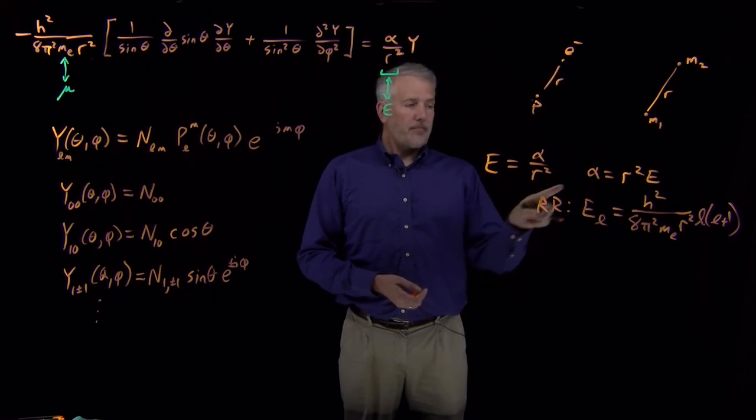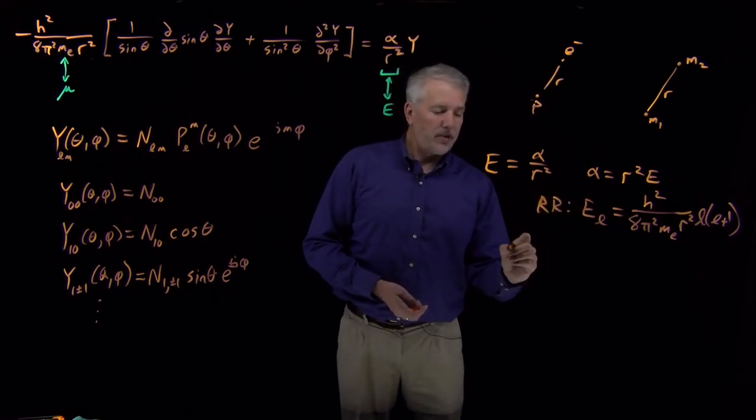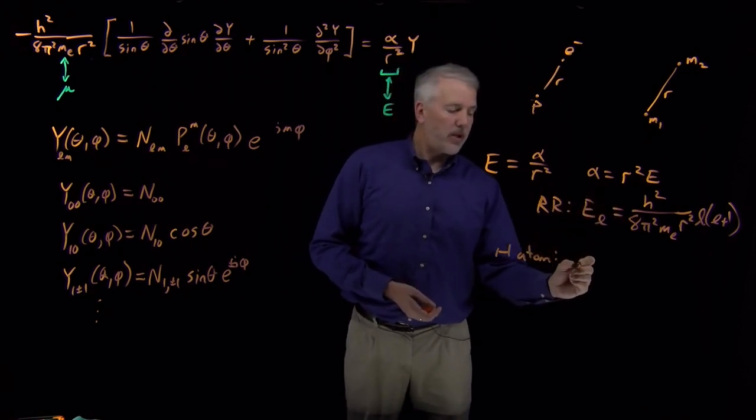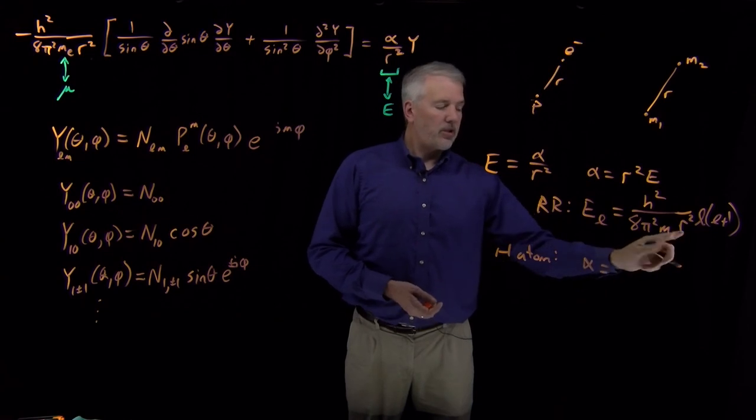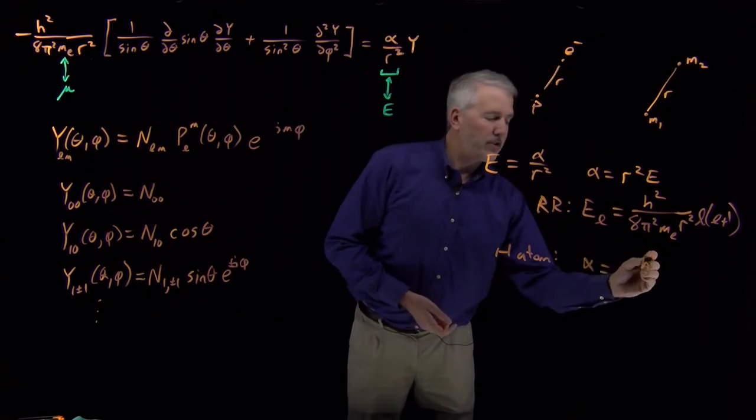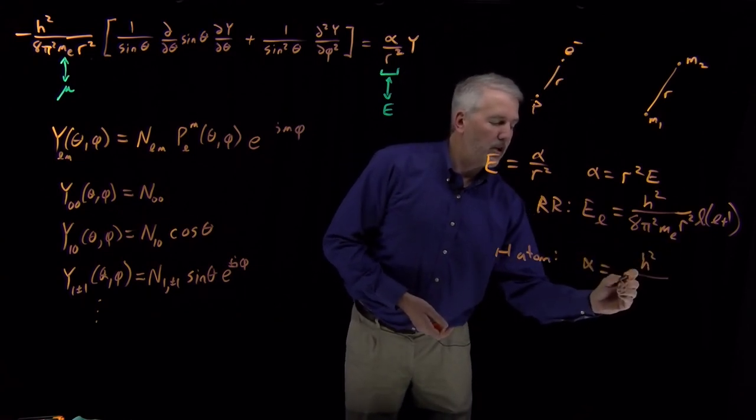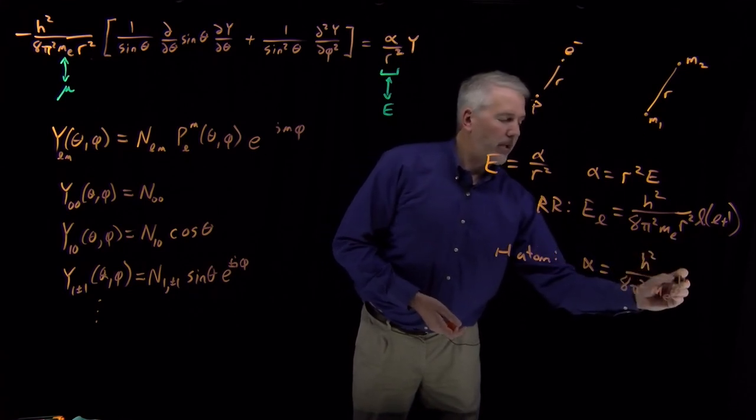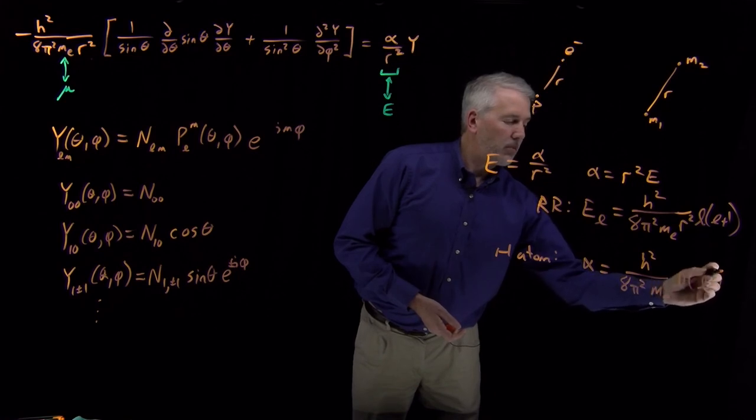What that means now, for our value of alpha for the hydrogen atom, if I just take that energy and multiply by r squared, there's an r squared in the denominator, so the value of alpha just works out to be h squared over 8 pi squared, mass of the electron, the r squared has gone away, and we still have an l times an l plus 1.